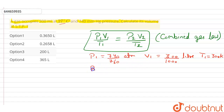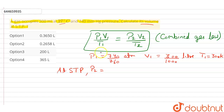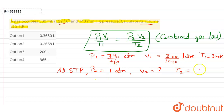We have to calculate the volume at STP — that is standard temperature and pressure. At STP, pressure P2 is 1 ATM. V2 is what we need to find out. T2, the standard temperature, is 273 Kelvin.